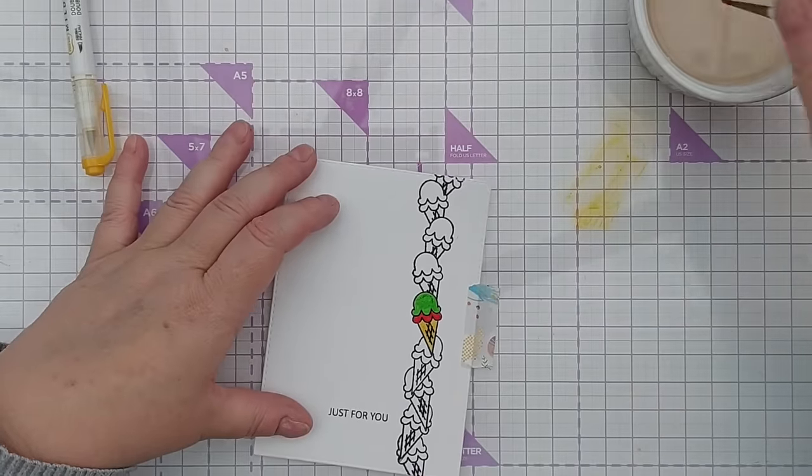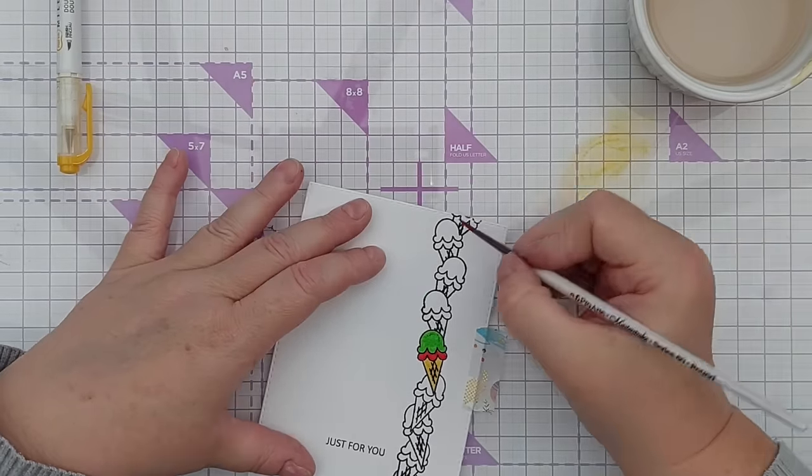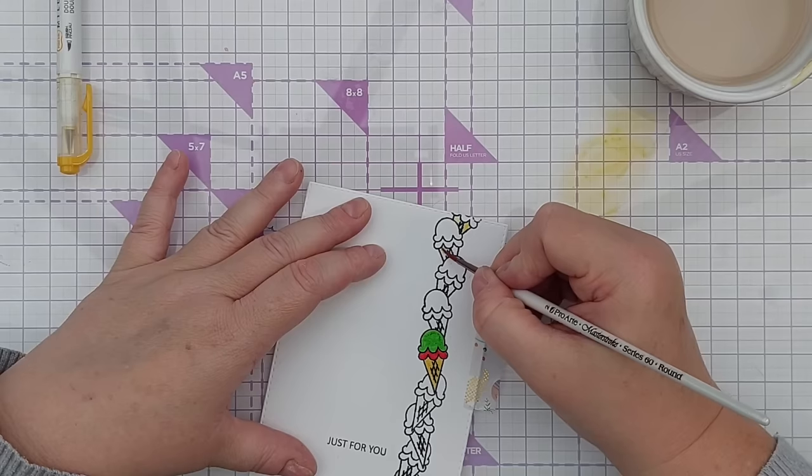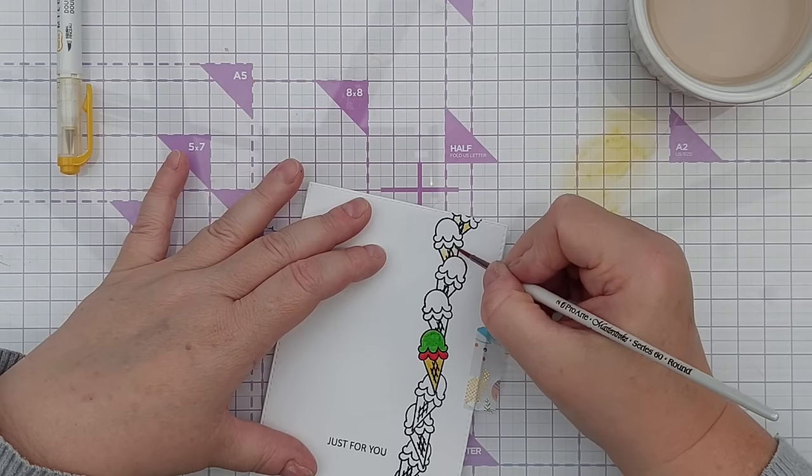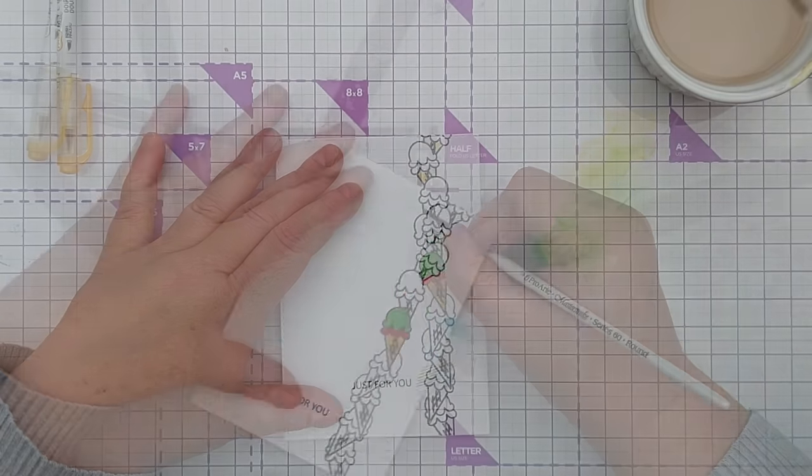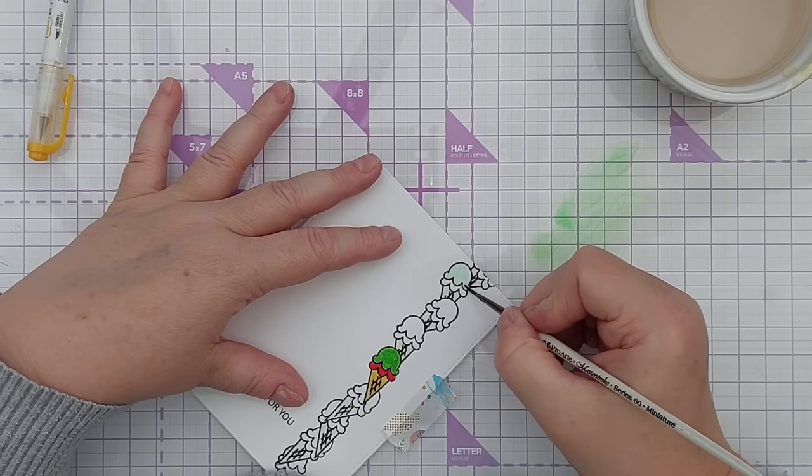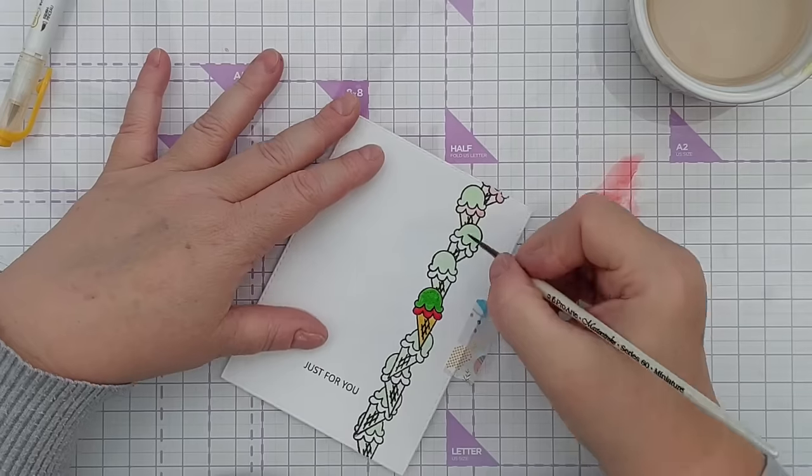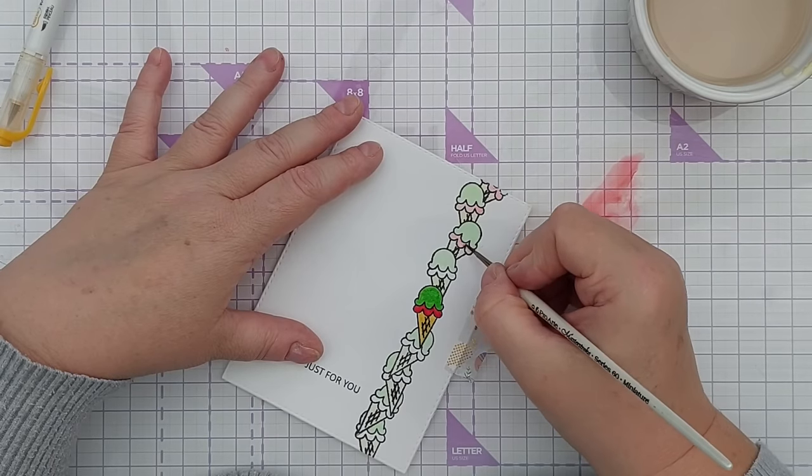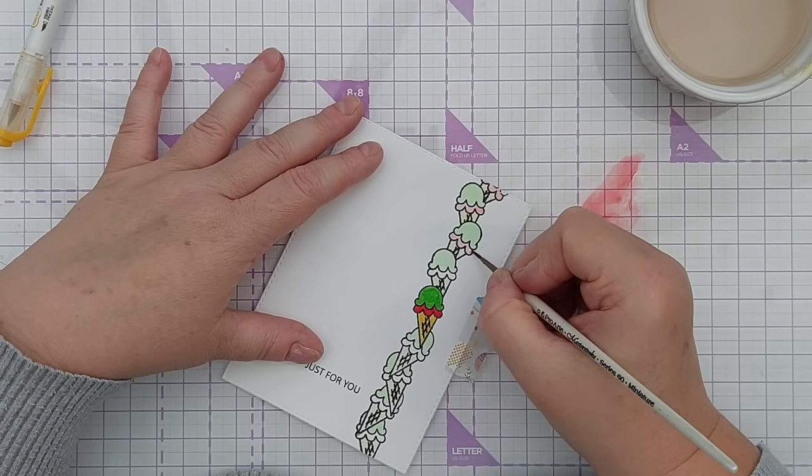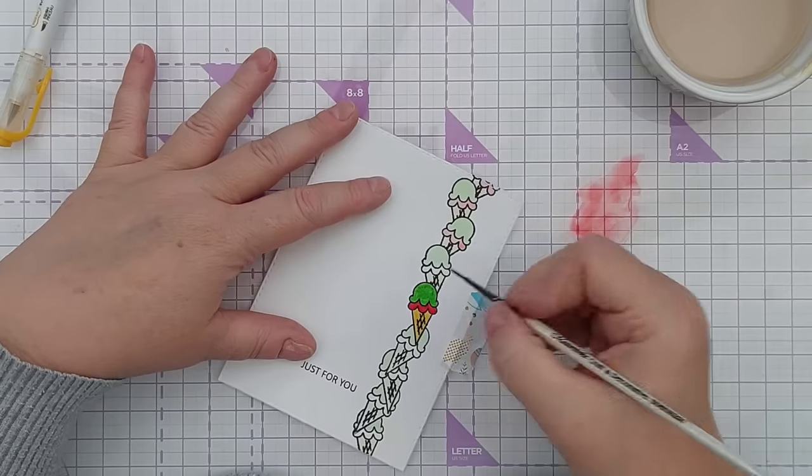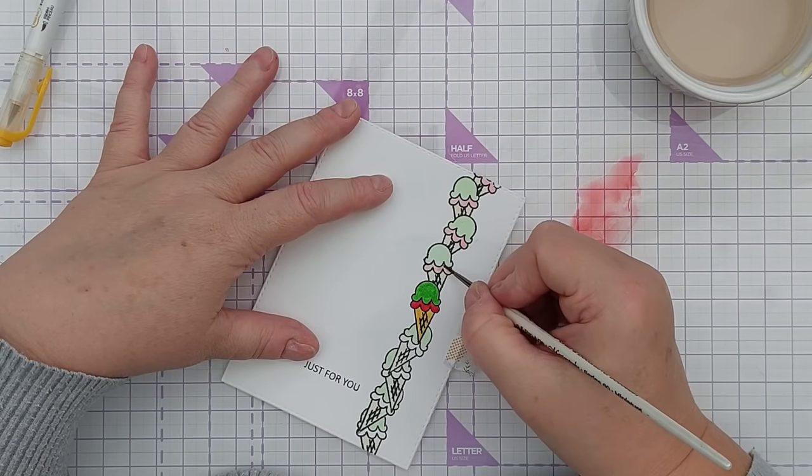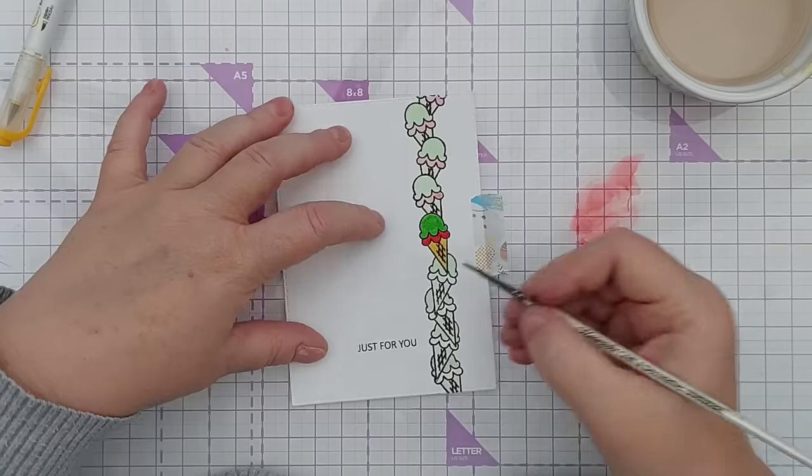Now I'm going to do the watercoloring again on the other ice creams just to make them background ice creams to give them a lighter color. If you wanted with these background ice creams or any background images, instead of stamping them in black you could stamp them in grey or another light color so they don't stand out as much.